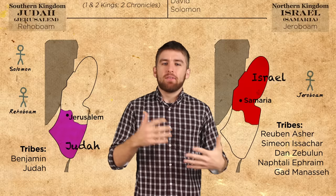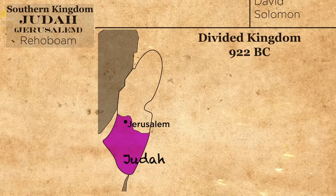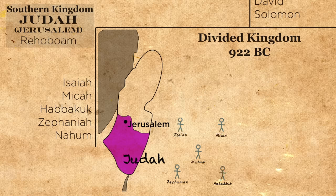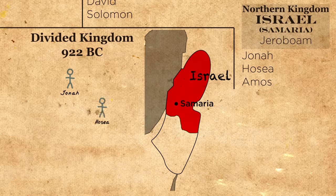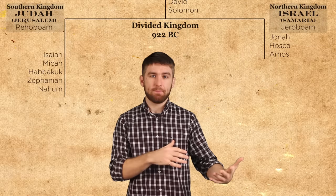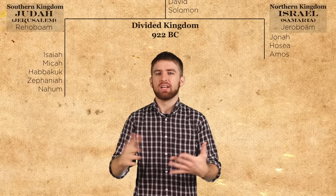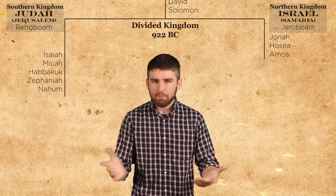This is the period of time when the books that we know of as the prophets begin. During the divided kingdom era, we have Isaiah, Micah, Habakkuk, Zephaniah and Nahum who prophesy to the southern kingdom, Judah. And then we have Jonah, Hosea and Amos who prophesy to the northern kingdom, Israel. The prophets are sent to guide God's people and deliver his messages to the people. They give a whole lot of warnings promising imminent destruction unless the people repent and follow God. Well, the people don't repent.